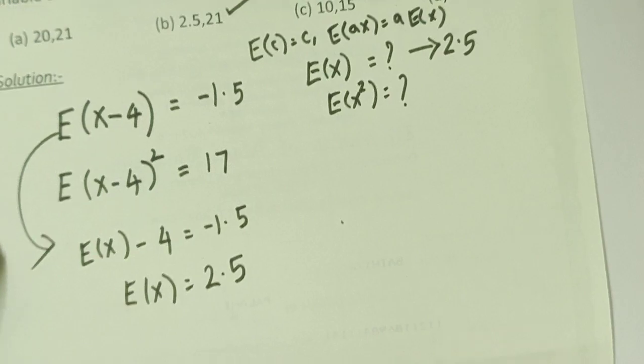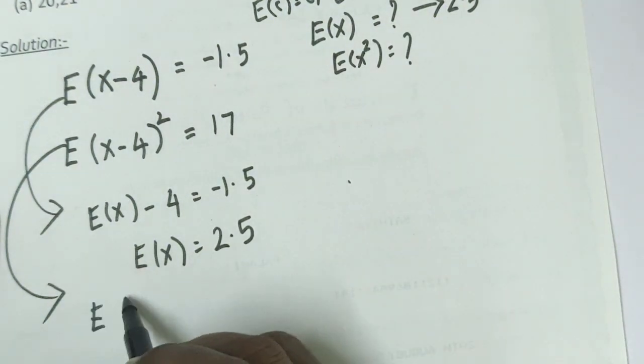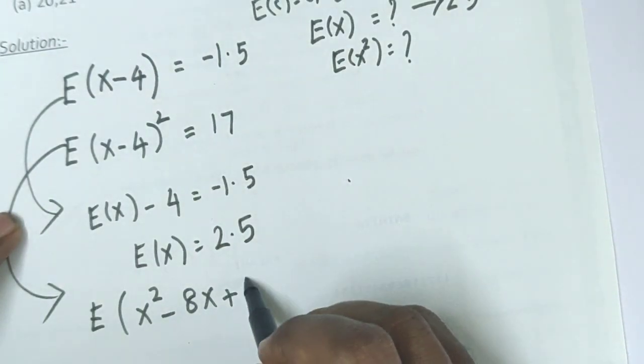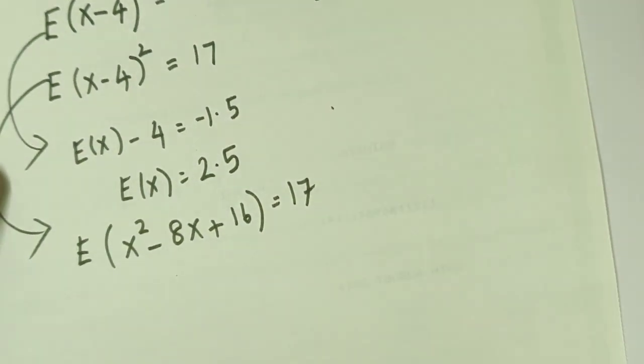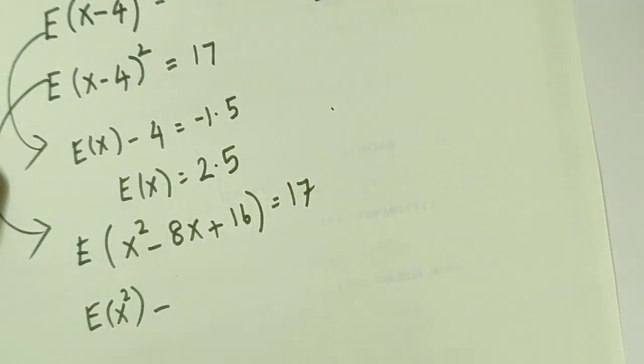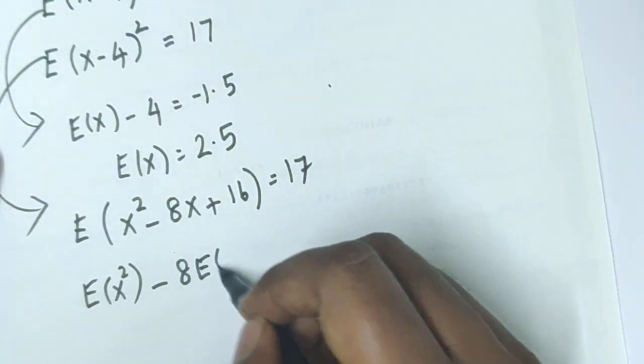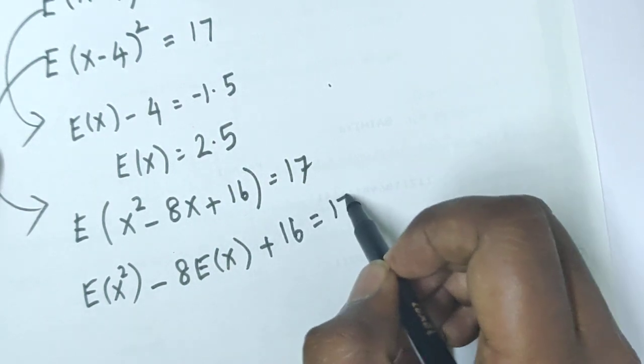Second relation: E of x minus 4 whole square equals 17. E of x square minus 2ab plus b square, 4 square is 16, equals 17. So E of x square minus 8 times E of x plus 16 equals 17.